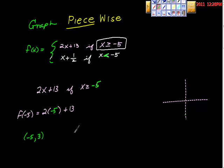So that's the point negative 5, 3, and this is negative 5, 3. Negative 5, 3. Now I'm going to ask myself this question.